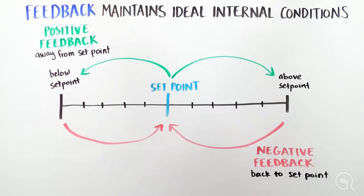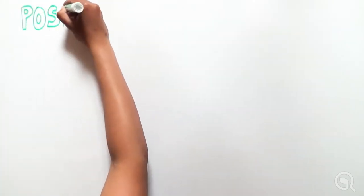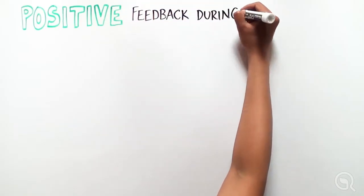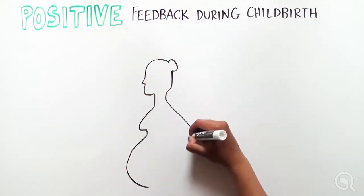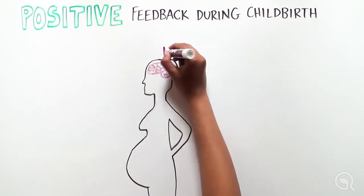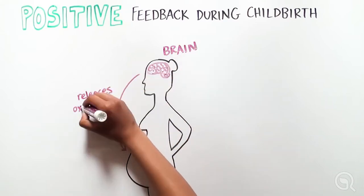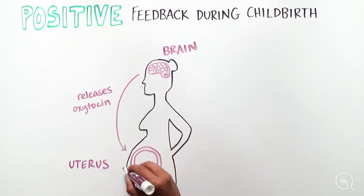Now let's look at positive and negative feedback in action within our bodies. The birth of a child is primarily controlled by positive feedback. The brain releases the oxytocin hormone at the start of labor, which causes muscles in the uterus to contract in waves.